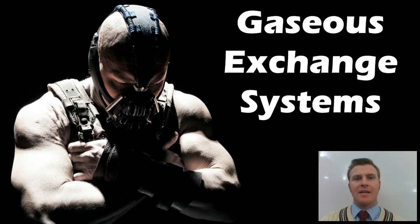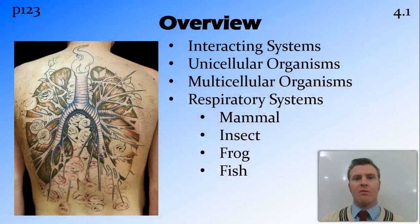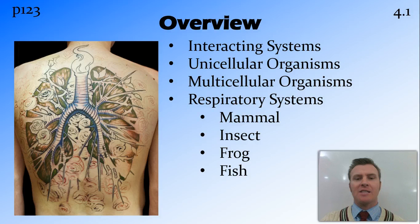In this video we're going to look at gaseous exchange systems. We're first going to look at how the different systems interact with each other in the body, then look at unicellular organisms and how they exchange gases, then looking at multicellular organisms and the requirements for a gaseous exchange system, and then we're going to look at four different gaseous exchange systems: that of a mammal, insect, frog and fish.